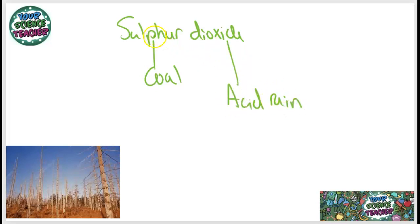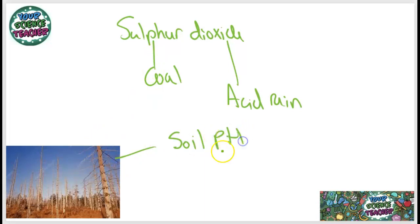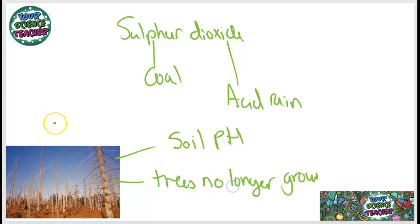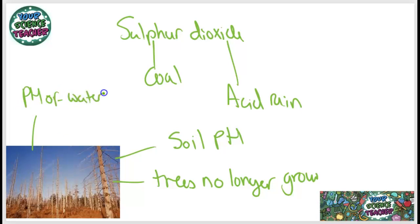Acid rain is having drastic effects on our environment due to it changing the soil pH. When the pH of the soil is altered, trees can no longer grow and they start to die. As well as changing the soil pH, acid rain also changes the pH of water in river ecosystems, which can cause fish and other aquatic life to also perish.